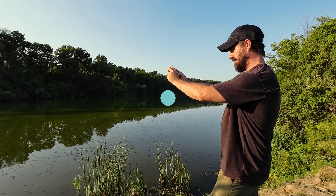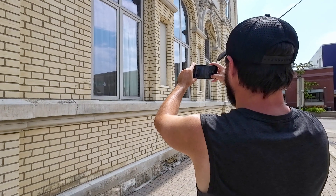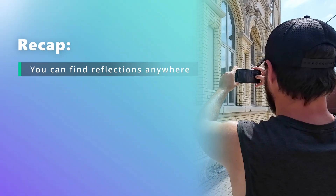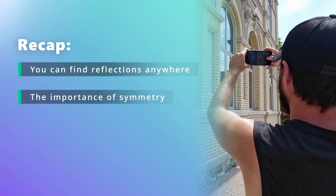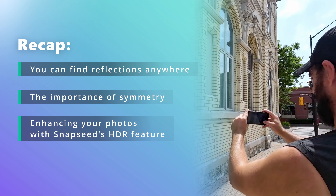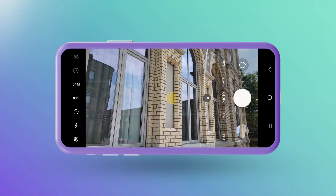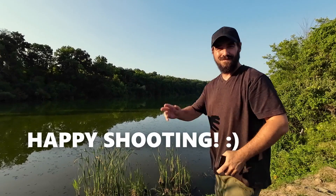And that's a wrap for this week. Thank you for joining me as we reflect on our smartphone photography. This week, we learned that you can find reflections just about anywhere, and how symmetry is important for your reflection images. And lastly, we saw how Snapseed can come in handy with its HDR Scape tool for enhancing those reflections. Now it's your turn to go out and show us the reflections around you. We're excited for you to share your images in our community discussion. Until next week, happy shooting.